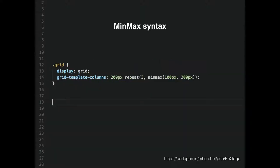Minmax sets the minimum and maximum of the row or column. In this case, we have one 200-pixel column that's always 200 pixels, and then three columns that will be between 100 and 200 pixels. It will try to fit into the parent container — if the container is larger it'll be 200px, if it's narrower it'll be 100px. It also looks at the content.